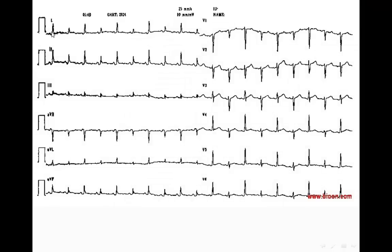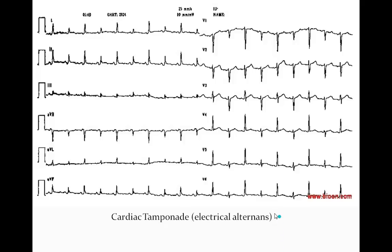Another case. This shows a very clear alternation in the voltage of the QRS complex from beat to beat. And then in the chest leads, we can find that even the electrical axis is different — here it is negative, then positive. This is the so-called electrical alternans, which is very unique in cases of cardiac tamponade.